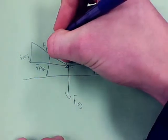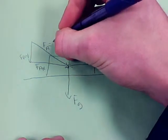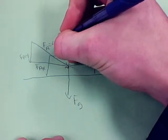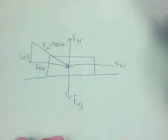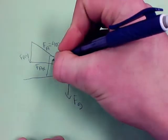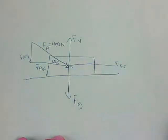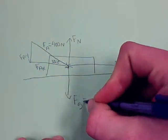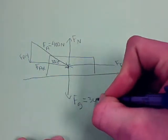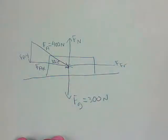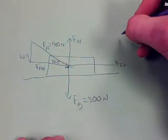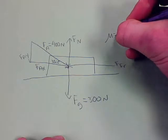Our givens for this problem are FA, which is 400 newtons, at 35.2 degrees, and the weight Fg, which is 300 newtons, and then mu, which is .570.